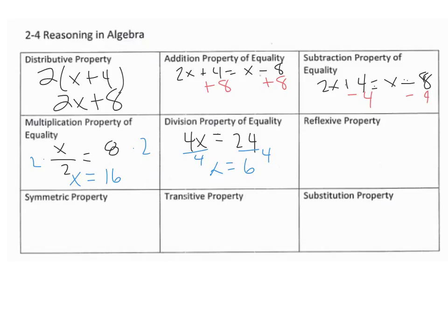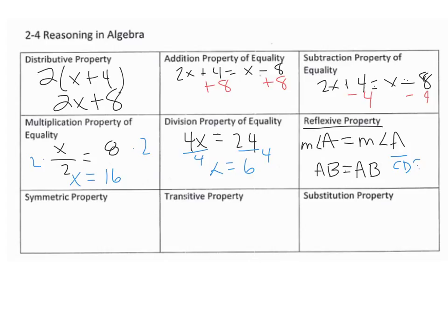The new properties are ones we're not familiar with yet. The first one is the reflexive property — it's the exact same thing on each side. So the measure of angle A equals the measure of angle A, or the distance AB equals the distance AB, or segment CD is congruent to segment CD. That's the reflexive property, and it comes in handy a lot in chapter 4.